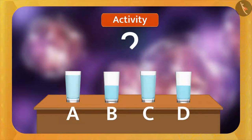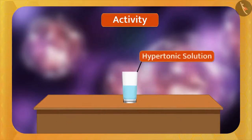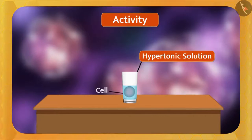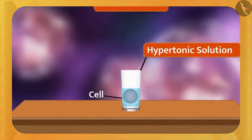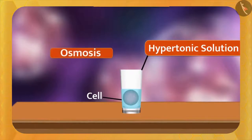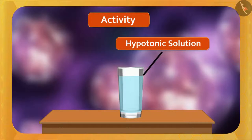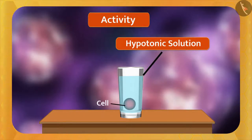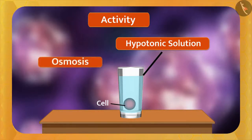What will happen if you put a cell into these solutions? First, put the cell in the hypertonic solution. In this solution, the concentration of water is less than that of the cell — so osmosis occurs. The water of the cell comes out through the plasma membrane and gradually the size of the cell decreases. Now put the cell in the hypotonic solution. Here, the concentration of water in the solution is higher than inside the cell — so osmosis occurs again. The water of the solution enters the cell through the plasma membrane and the size of the cell increases.